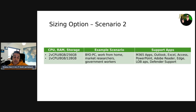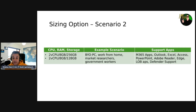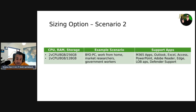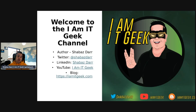Scenario two is aimed at bring-your-own-PC, working from home, market researchers, and government workers. From an applications perspective, we've got M365 apps including Outlook, Excel, Access, PowerPoint, plus Adobe Reader, Edge, line-of-business apps, and Defender support. You can see the difference — we can start using more M365 applications: Outlook, Access, Excel, PowerPoint, and so on. Those are the two scenarios for this episode. Now we're going to jump into the demo and create the Azure network connection.